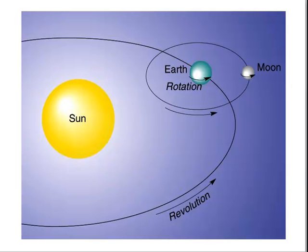Here's a picture of the Sun, Moon, and Earth system. You can see the Earth rotating on its axis, and the Moon is rotating as well. The Moon revolves around the Earth, and the Earth revolves around the Sun. The Sun stays in a stationary position.